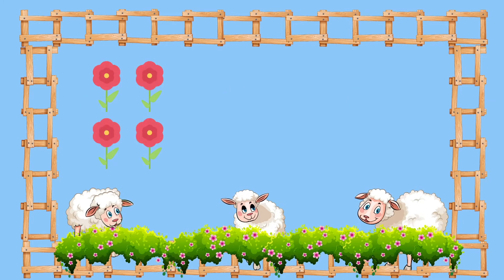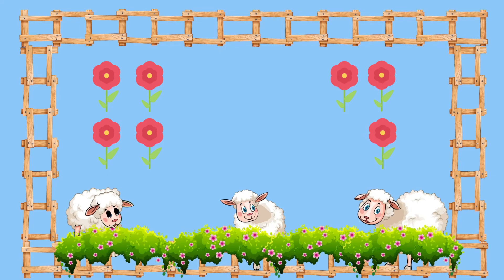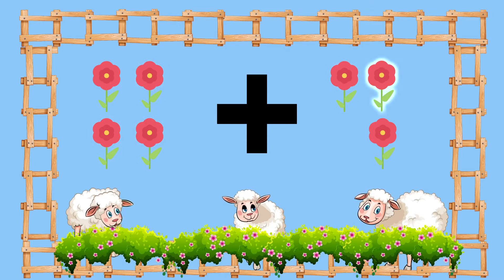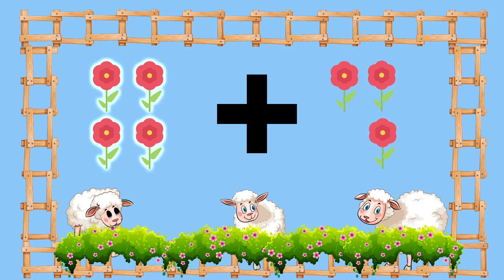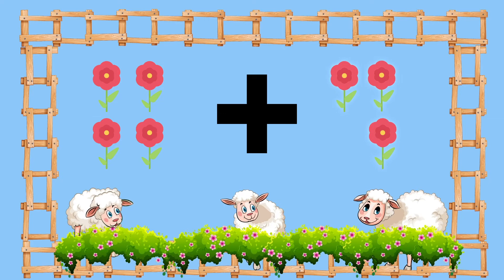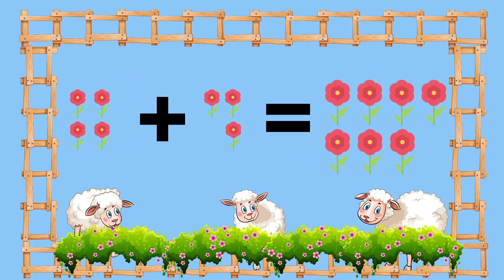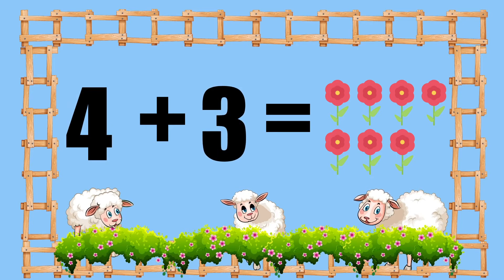Similarly, here are four flowers and here are three flowers. Let's add them: one, two, three, four, five, six, seven. So four flowers plus three flowers equals to seven flowers, which means four plus three equals to seven.